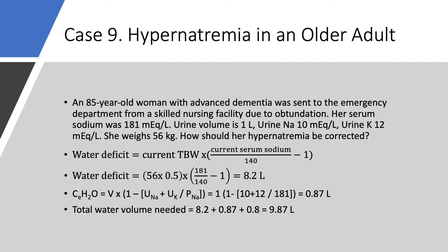You're not going to give 9.87 liters over one day. Divide this over three to four days. Start with D5W at maybe 125–150 ml per hour, then measure sodium every six to eight hours and adjust the rate accordingly.